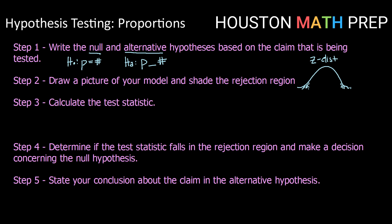For our test statistic, when we calculate that, that's going to be a Z critical value, or Z star. That's going to be calculated by taking P-hat — our proportion from a sample — minus P, divided by the standard error, which is the square root of P times 1 minus P over N.